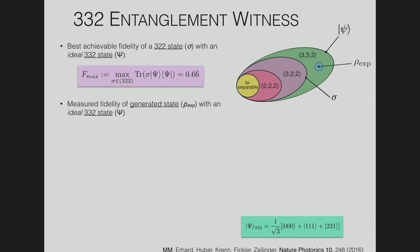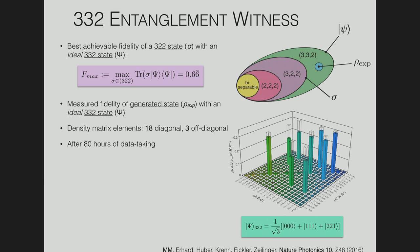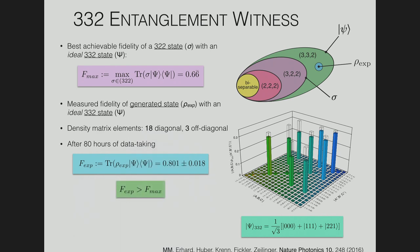We took data for four days. Our expected density matrix elements show sizeable off-diagonals, meaning our state is coherent in these probability amplitudes. We get a fidelity of about 80%, which is above the bound of two-thirds — hence our state can only be explained by entanglement in three times three times two dimensions.